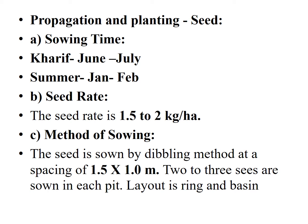Regarding method of sowing, seeds are mainly sown by the dibbling method at a spacing of 1.5 by 1 meter, with 2 to 3 seeds sown in each pit. The layout used is the ring and basin method. In the modern method, seedlings are prepared in a nursery and then transplanted to the main field, so direct sowing by the dibbling method is not required.